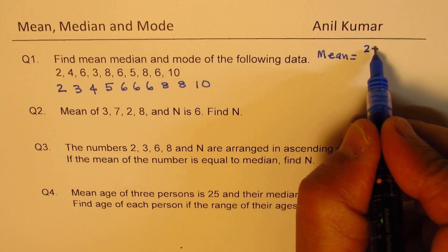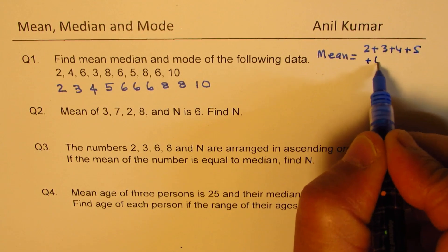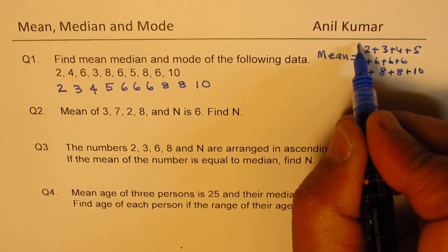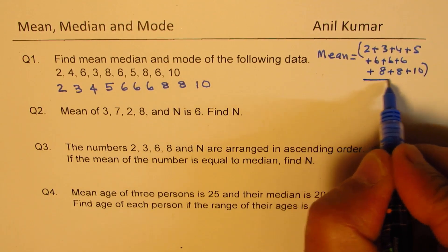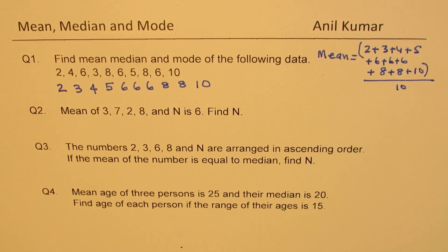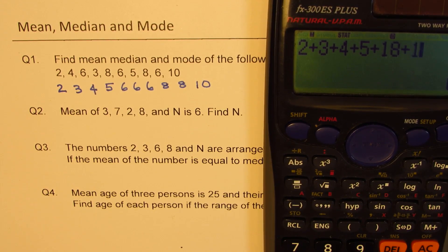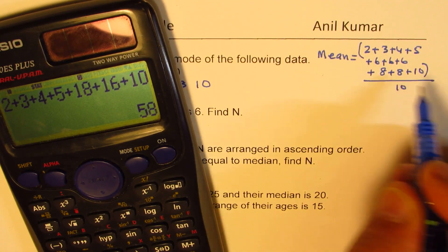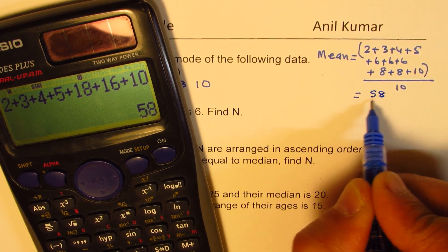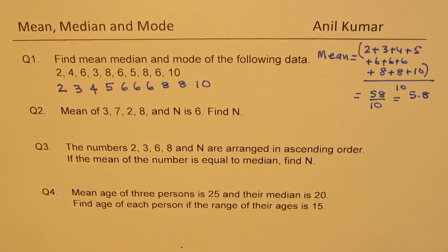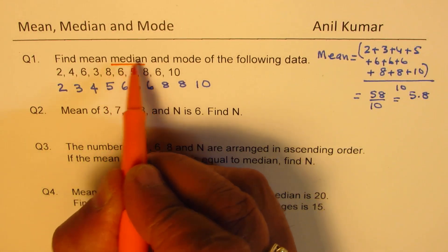The mean: add them all and divide by ten. So we have two plus three plus four plus five plus eighteen for three sixes, plus sixteen for two eights, plus ten. That gives a total of 58, and 58 divided by 10 gives us 5.8. So we have 5.8 as the mean.